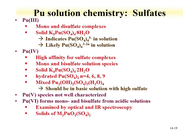A range of plutonium sulfates have been evaluated, including plutonium-3 with mono- and disulfate complexes, and solid potassium-plutonium sulfates. Plutonium-4 has high affinity for sulfate, also forming mono- and bisulfate complex solution species. The plutonium-5 species is not well characterized. Like plutonium-4, plutonium-6 forms mono- and bisulfate from acidic solutions, and these compounds have been examined by both optical and IR spectroscopy with solid plutonium species produced.